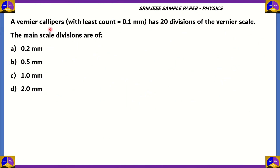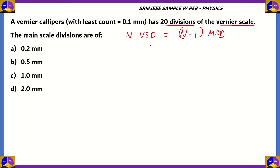Let's start off with a physics question. A vernier caliper with a least count of 0.1 millimeters has 20 divisions of the vernier scale. Find out the length of each main scale division. The vernier scale has 20 divisions, and for a vernier caliper, the rule is that N vernier scale divisions equals N minus 1 main scale divisions. So if you have 20 vernier divisions, the main scale divisions will be 19.